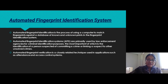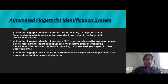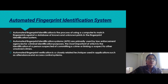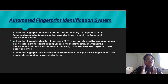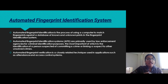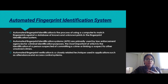Automated Fingerprint Identification System is a process of using a computer to match a fingerprint against a database of known and unknown prints. There is a database which has different kinds of fingerprints — some known, some not known — and it is matched with the print of a suspected person or from a victim.